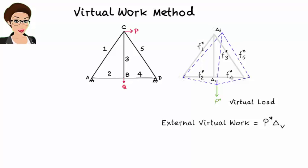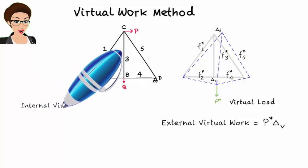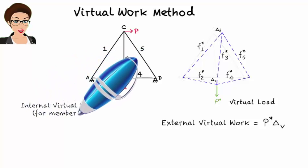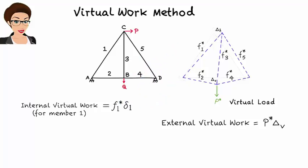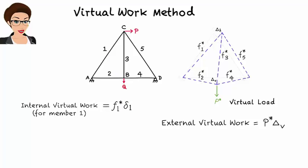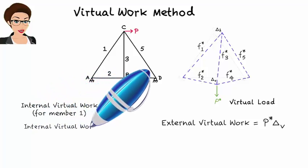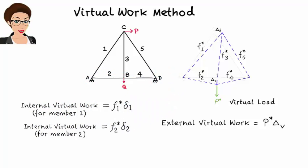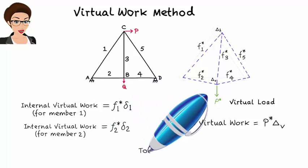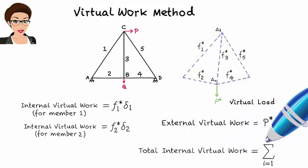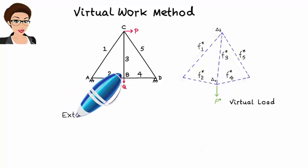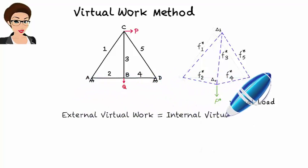Since the real loads p and q cause real member deformations, the virtual load also causes internal virtual work. For member 1, internal virtual work equals f-star-1 times delta-1, where f-star-1 is the virtual member force due to p-star, and delta-1 is the real elongation of the member due to p and q. Similarly, for member 2, internal virtual work equals f-star-2 times delta-2. The total internal virtual work is the sum over all members. The principle of virtual work states that external virtual work equals internal virtual work.